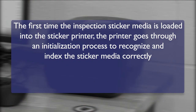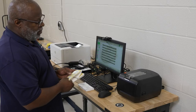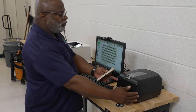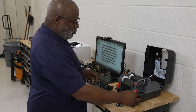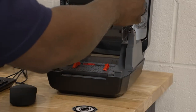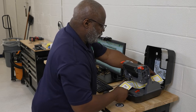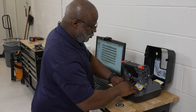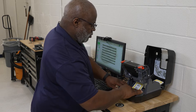The first time the inspection sticker media is loaded into the sticker printer, the printer goes through an initialization process to recognize and index the sticker media correctly. This only needs to be done once and can be performed with either type of sticker stock. To begin, open the printer cover by pressing the latches on both sides of the front of the cover. Press in on the locking tabs to open the print and ribbon mechanism. Install the inspection sticker media from the rear of the printer, feeding the media with the black indexing stripe facing down. Slide the media through the guides and place the stack inside the back of the printer.